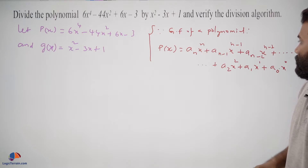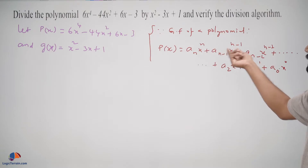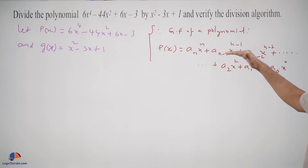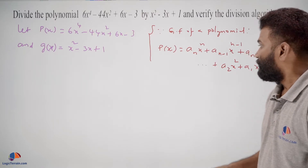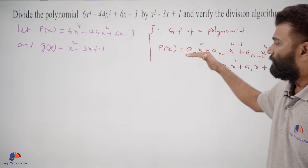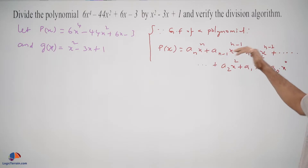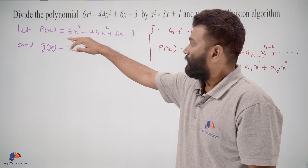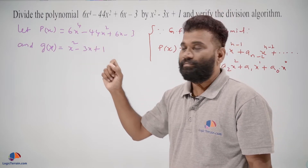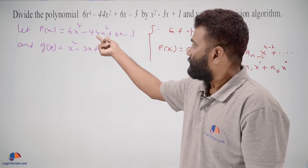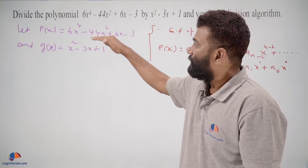The degree of the terms should be in either increasing or decreasing order. For division, we need decreasing order: nth term, n-minus-1 term, n-minus-2 term, and so on. In the given polynomial, x to the power of 4 is present, but the x to the power of 3 term is missing. x square, x, and the constant term are present. So before proceeding with division, we need to make some changes.